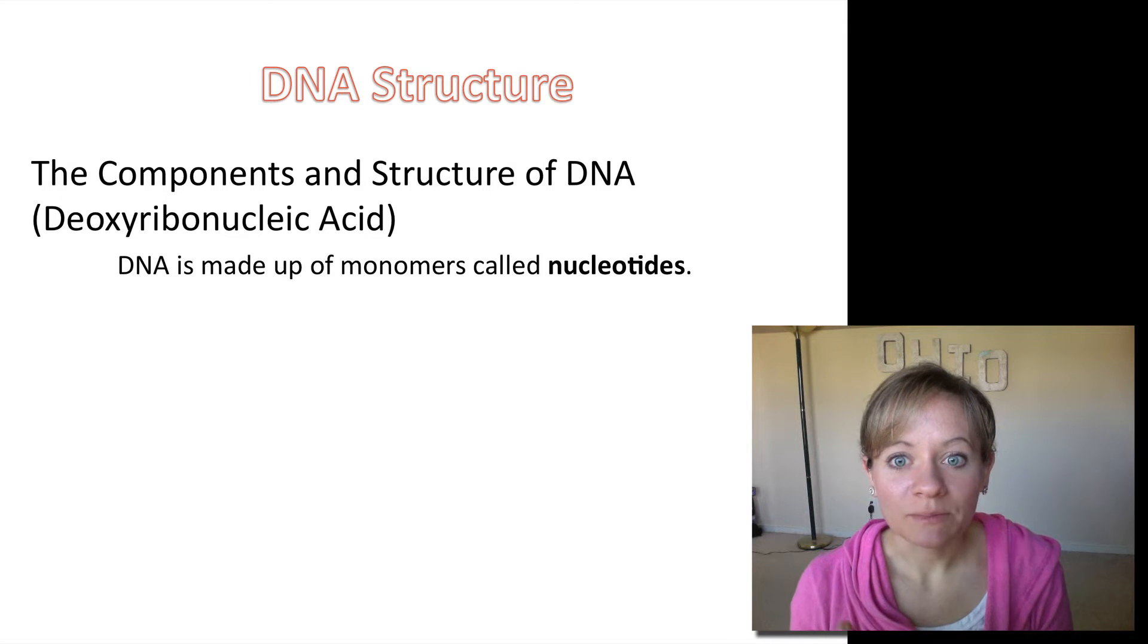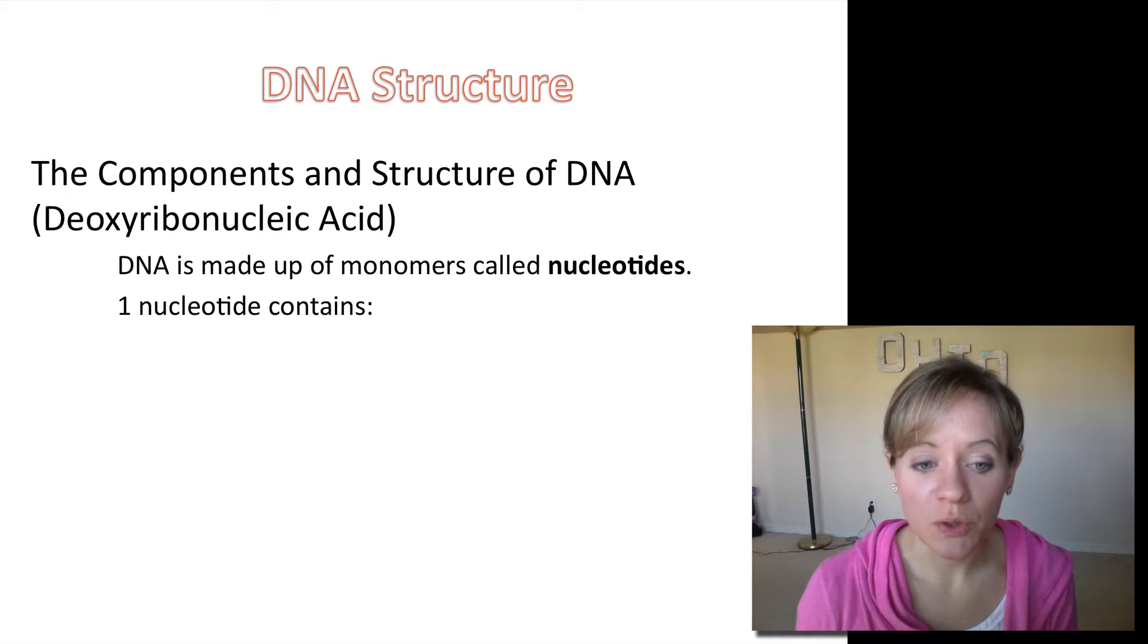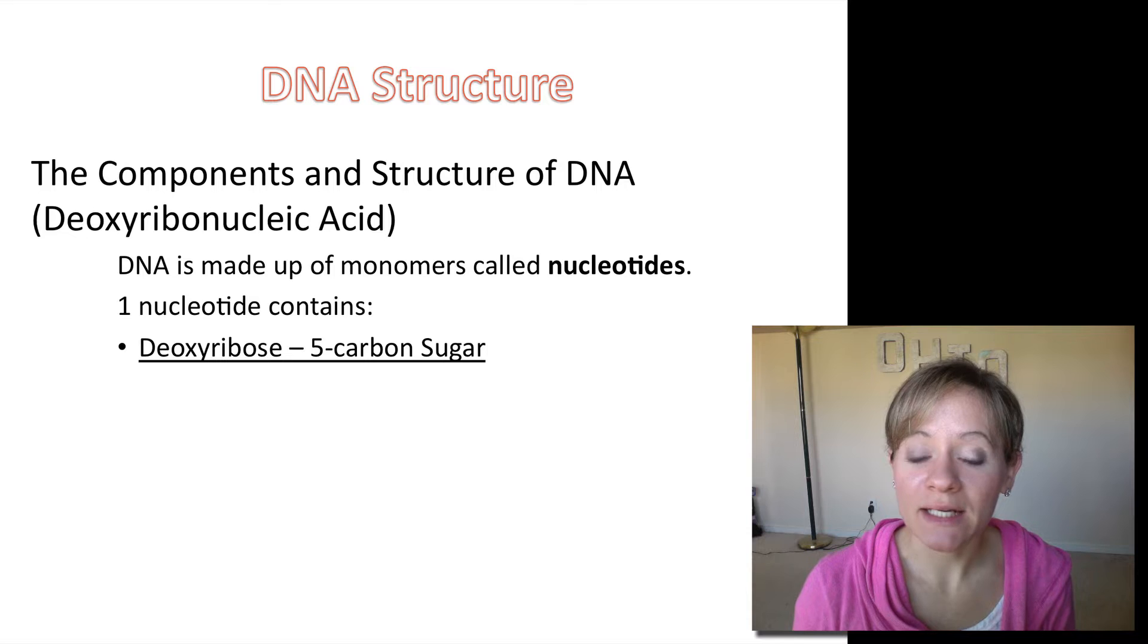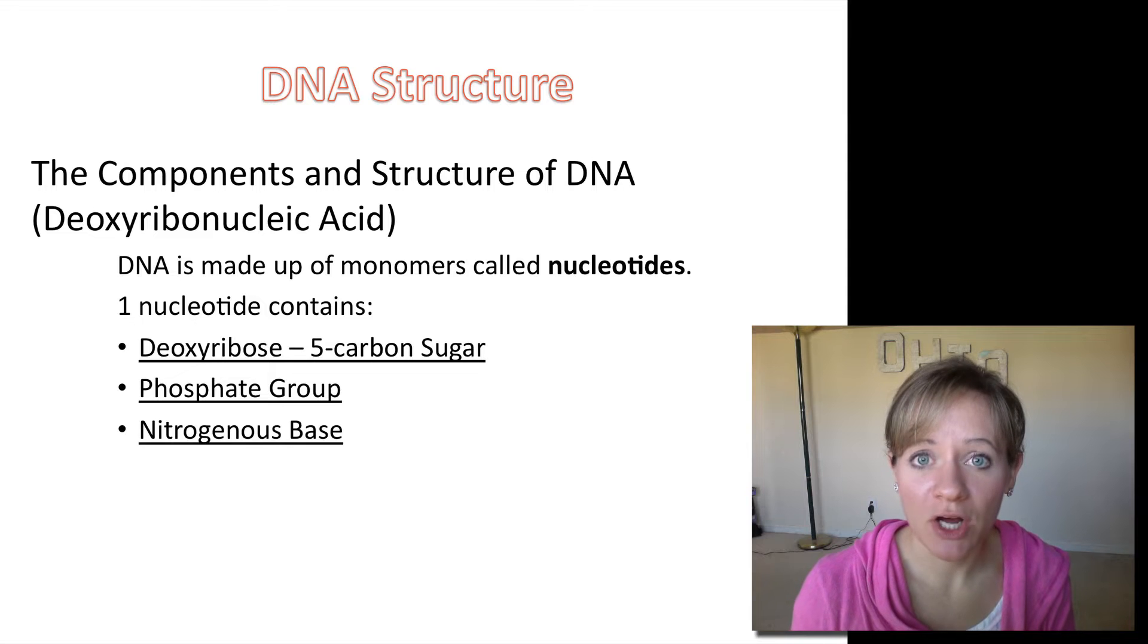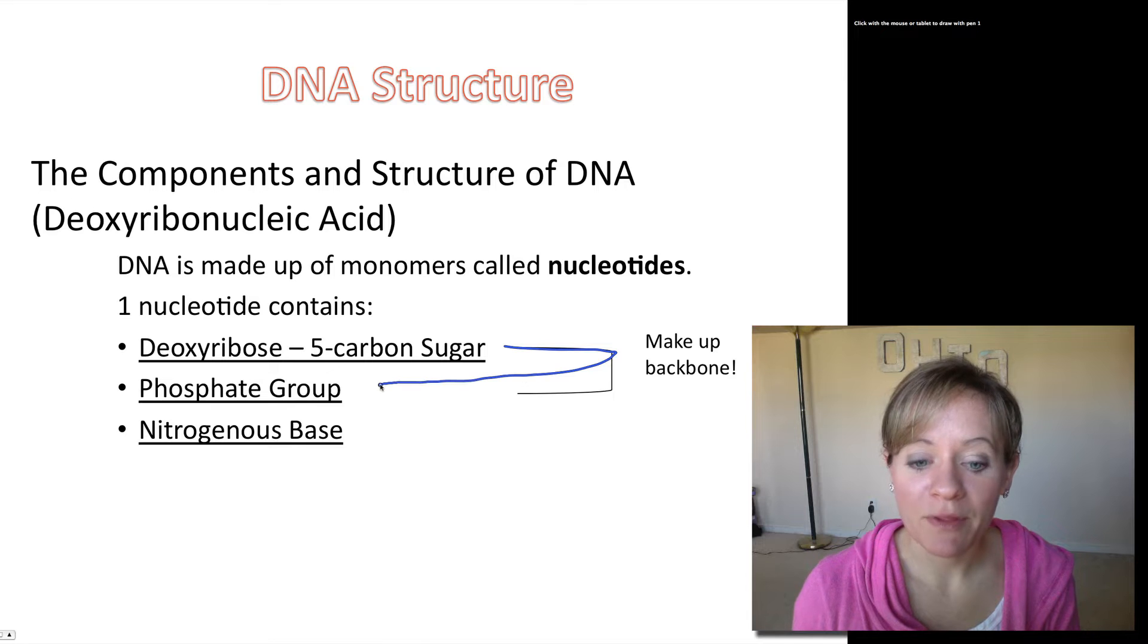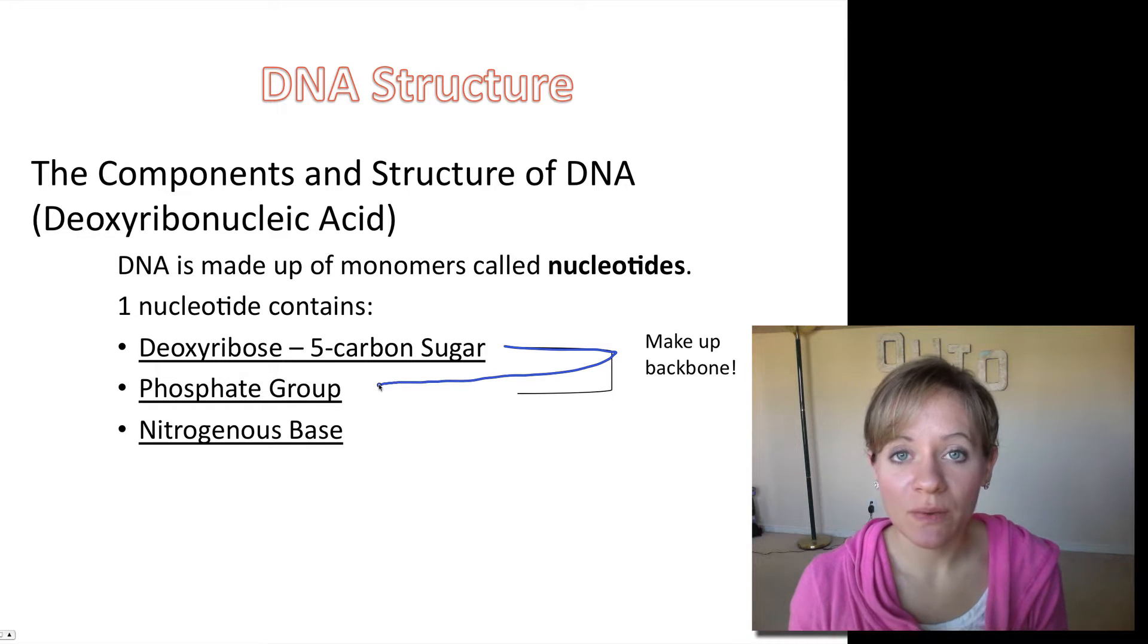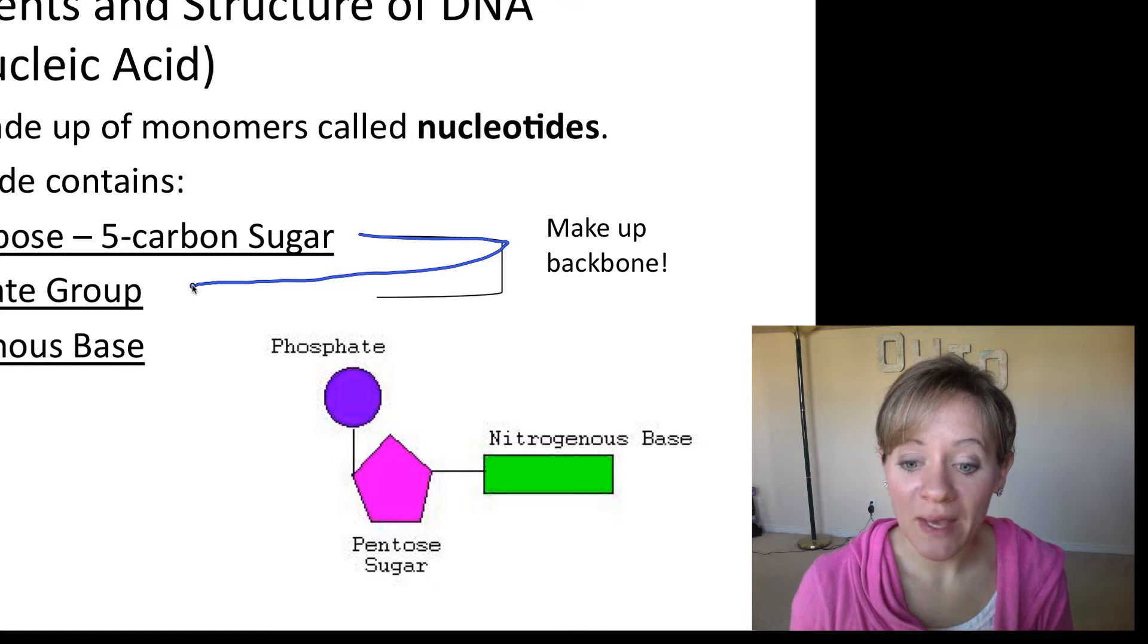So we're going to now look at what is the DNA structure. DNA stands for deoxyribonucleic acid, and as we learned earlier in the year, we know the monomer is called a nucleotide, and one nucleotide contains a deoxyribose, which is a 5-carbon sugar. It contains a phosphate group and a nitrogenous base. Now I do want you to remember that these first two are what make up the backbone of the DNA. So this is an example of a nitrogenous base. Please draw that in your notes and label it so that you know the three parts to a nucleotide.